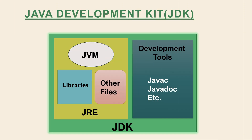Now let's understand what is JDK. Java Development Kit is a kit which provides the environment to develop and execute the Java program. Java Development Kit includes two things: first one is the JRE, and second one is the development tools.